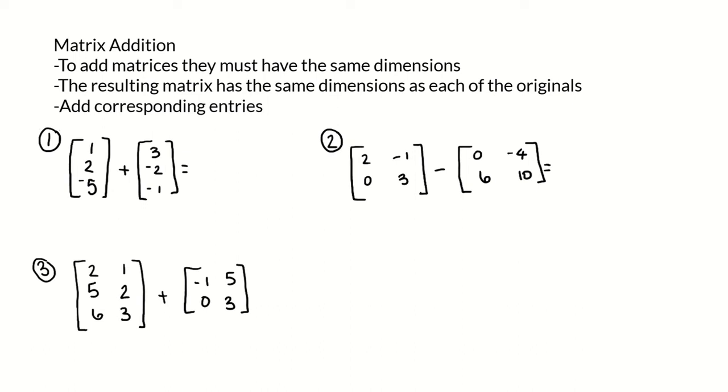To add two matrices, you need to make sure that they have the same exact dimensions, and the resulting matrix is going to have the same dimensions as each of the originals. To complete the matrix addition, you add the corresponding entries, so the entries that are in the same position get added together, and then that addition is placed in the same spot in the result matrix.